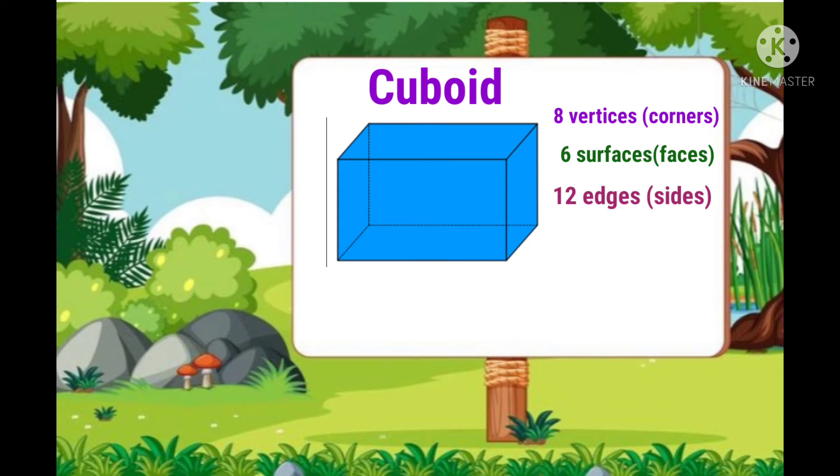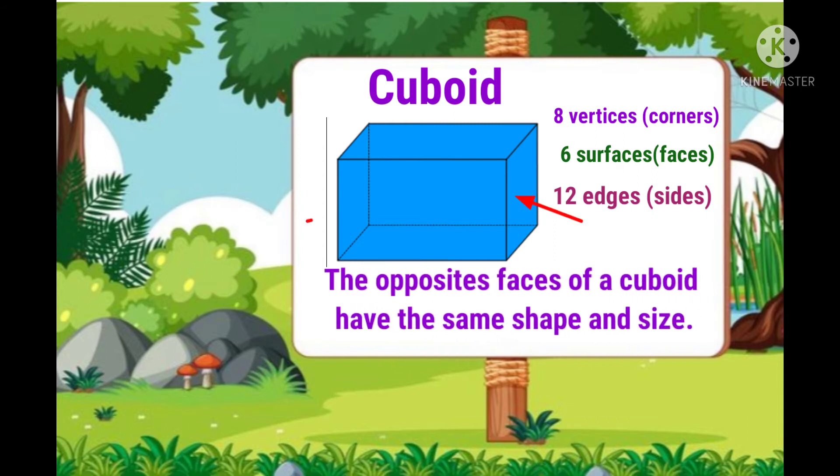A cuboid has 12 edges: 1, 2, 3, 4, 5, 6, 7, 8, 9, 10, 11 and 12. Children, the opposite faces of a cuboid have the same shape and size.